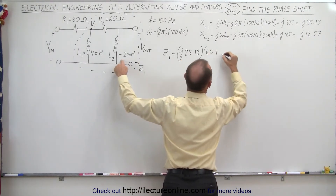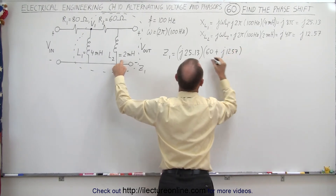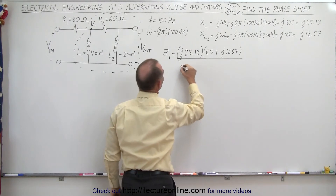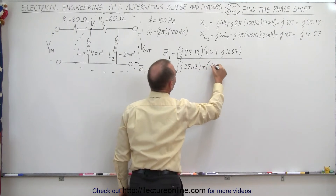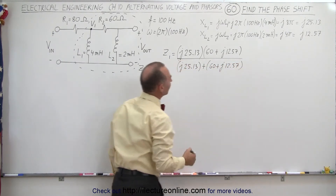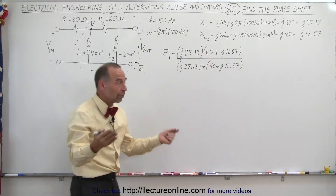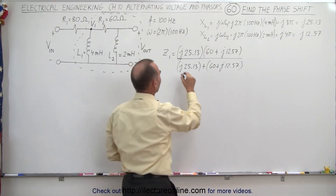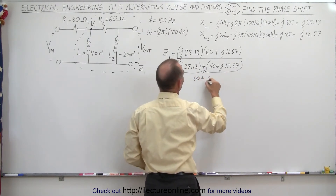Plus L2, which is J12.57. The whole thing is divided by the sum of the two, which would be J25.13 added to 60 plus J12.57. So now we're going to convert this into magnitude and angle format so we can go ahead and multiply. Once we add this together, we're going to convert that as well. So adding these together gives us 60 plus J37.70 for the denominator.